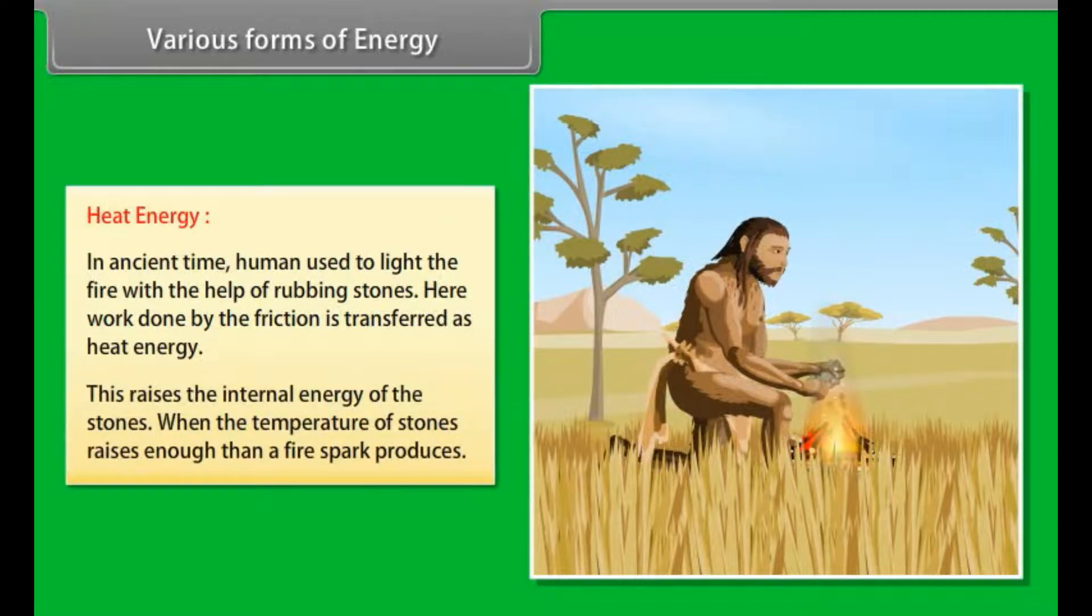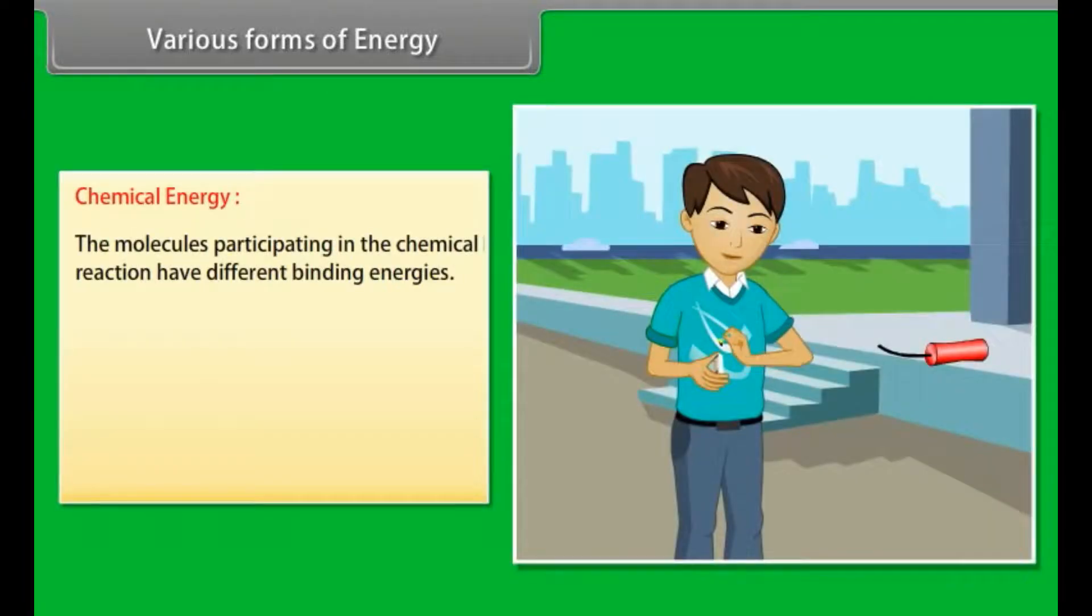Heat energy. Let us take an example for better understanding. In ancient time, human used to light the fire with the help of rubbing stones. Here work done by the friction is transferred as heat energy. This raises the internal energy of the stones. When the temperature of stones raises enough, then a fire spark produces.